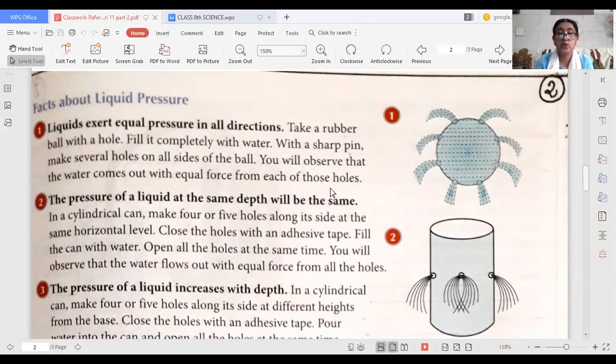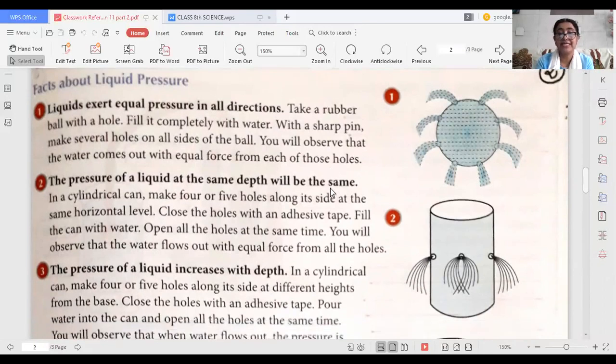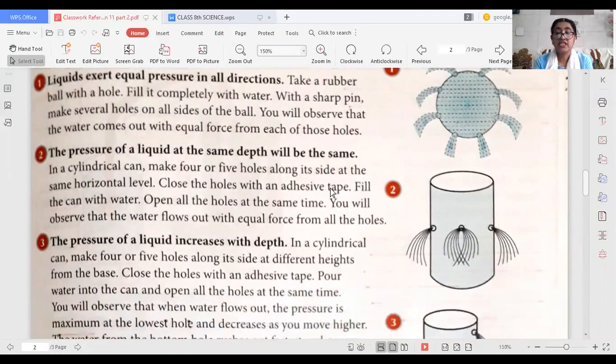The pressure of a liquid at the same depth will be the same. For this, if you take a cylindrical can and then make four or five holes there at the same horizontal level, and then close these holes with tape, and after that fill the can with water.